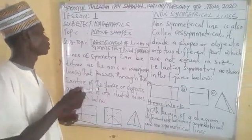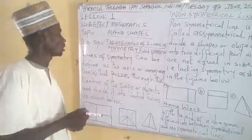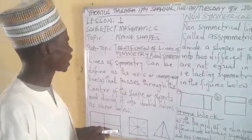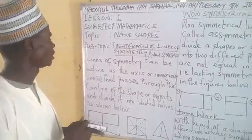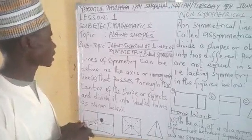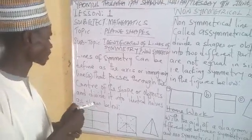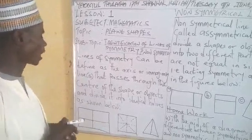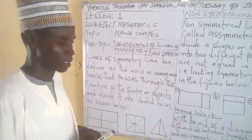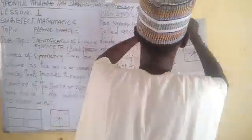Today we are going to a new topic, which is plane shapes. We are going to look at how to identify symmetrical and non-symmetrical lines. Lines of symmetry can be defined as the axis or imaginary line that passes through the center of a shape or object and divides it into two identical halves, as shown on the chart.